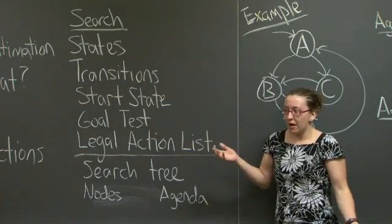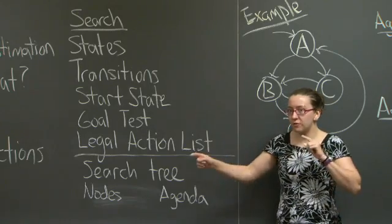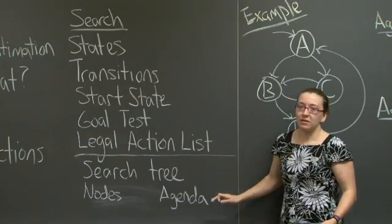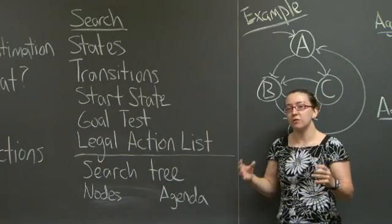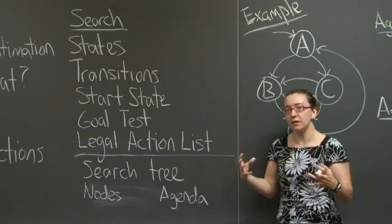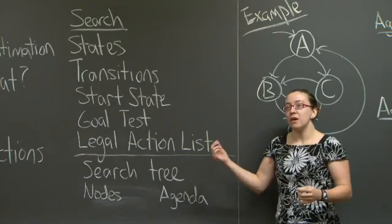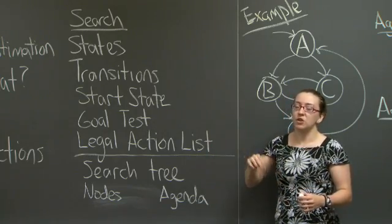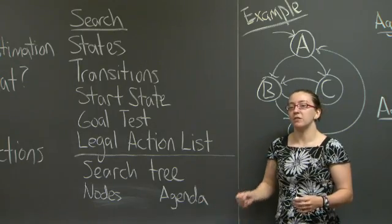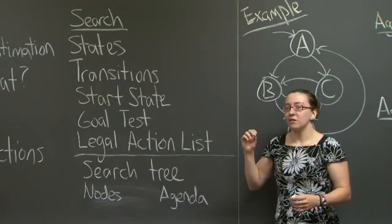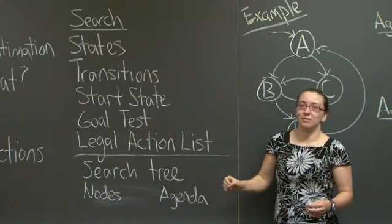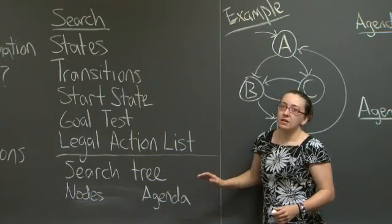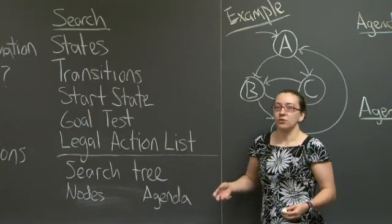So the only thing left to do is, how do you figure out which paths to follow first? That's where the agenda comes in. The agenda is going to be the collection of all partial paths you've ever created as a consequence of expanding nodes and then putting its child nodes on a partial path meant for future expansion. The order in which you add and remove things to the agenda is going to determine what your search tree looks like.